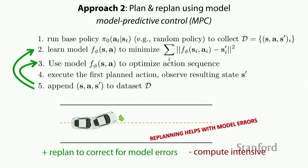Regarding sparse rewards: learning a policy can also help, because if in aggregate you eventually observe a good reward, the policy parameters will be trained to try to accomplish those. But with very sparse rewards, model-based and model-free optimization will run into the same sorts of issues if they never observe rewards. Things like relabeling, as seen in the homework assignment, can also help with that.